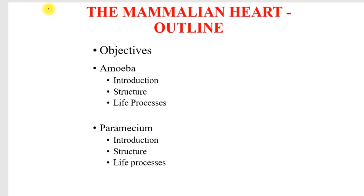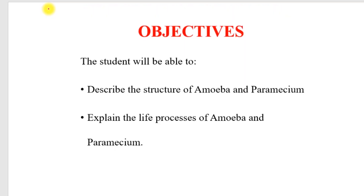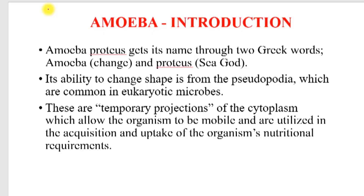We shall go through those two organisms today. My objective is that you should be able to describe the structure, draw and label it, and give the roles of the organelles contained within. I'll be talking about osmoregulation and reproduction — conjugation especially for paramecium — and you ought to give a very good description of those events.